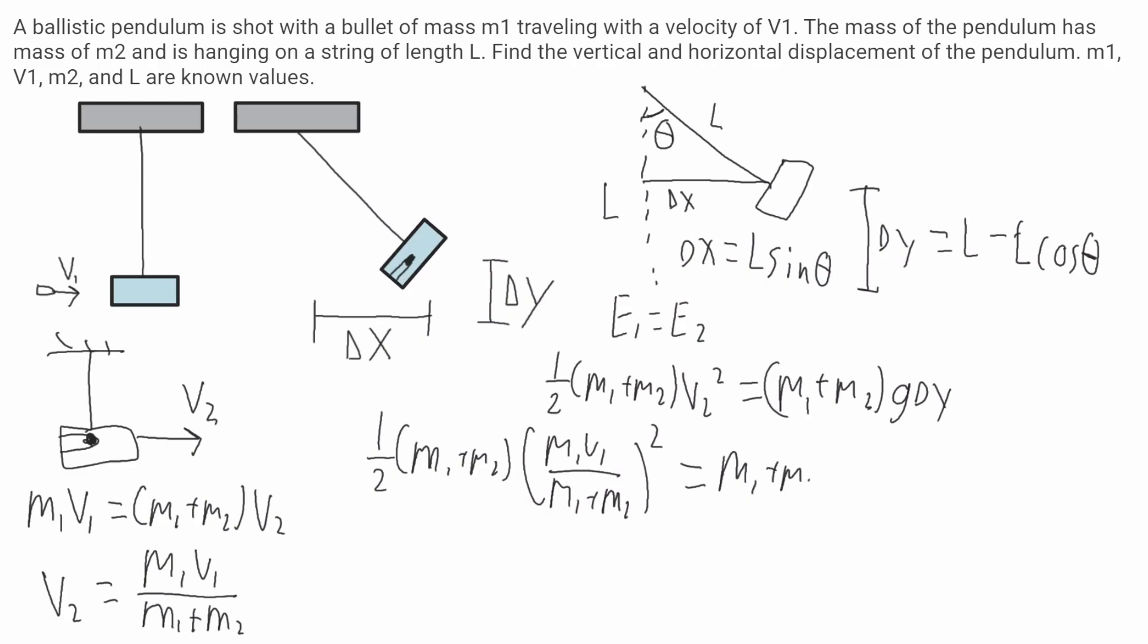This m1 plus m2 is going to cancel on both sides. I'm only able to do this because they're in parentheses and they're being multiplied to the other terms.